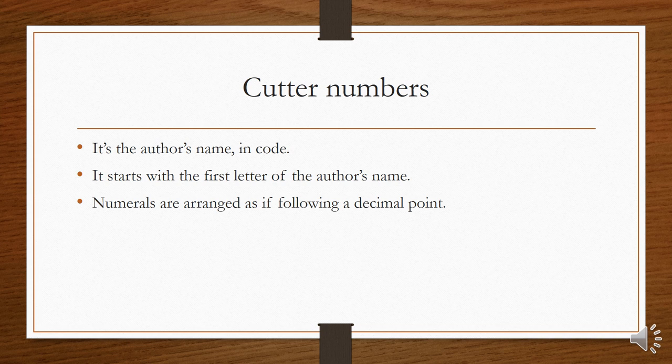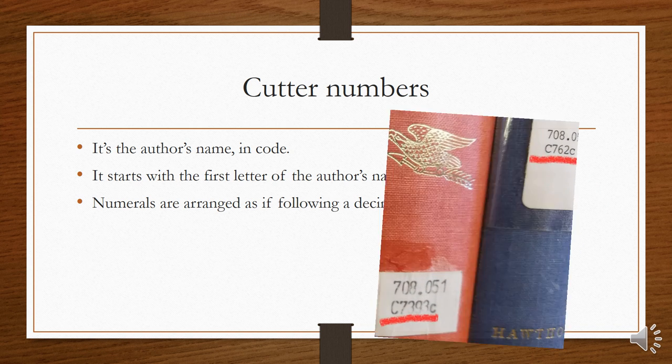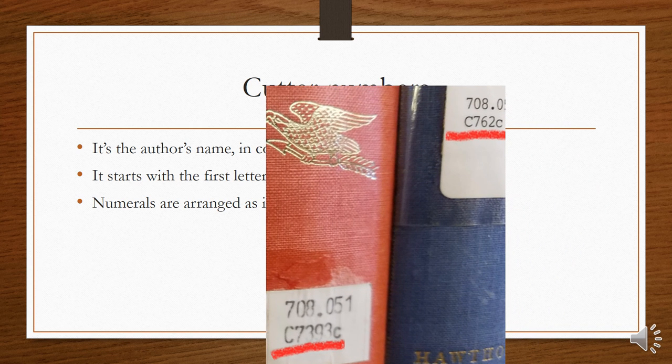Basically, it's a code that's a shortened version of an author's name. The first letter is always the first letter of the author's name and then a series of numbers follows after that. Again, you don't need to know exactly how the system works. The only thing to keep in mind is that the numerals in a cutter number are ordered as if they come after a decimal point, which is why in our example here you can see that 762 comes after 7393.